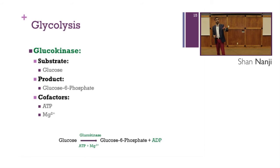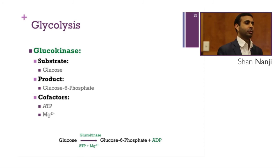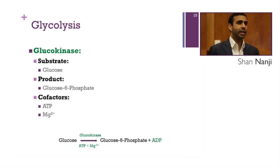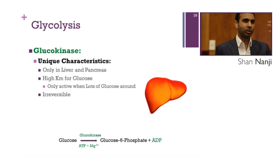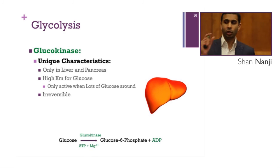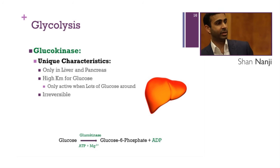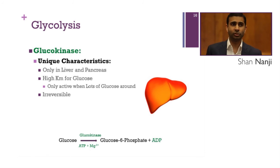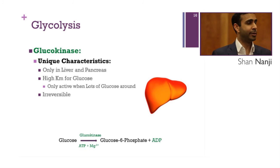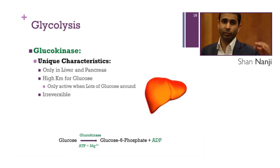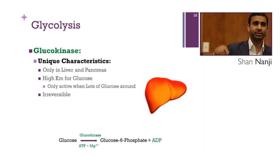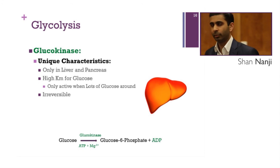Now let's compare with glucokinase. The substrate, product, and cofactors are the same as hexokinase. The key difference: hexokinase works on all 6-carbon sugars and is found in all organs, while glucokinase only works on glucose and is only found in the liver and pancreas. Glucokinase has a high Km for glucose, meaning it is only active when large amounts of glucose are present. It is also irreversible. So: hexokinase — all organs, any 6-carbon sugar, low Km; glucokinase — liver and pancreas only, glucose only, high Km.